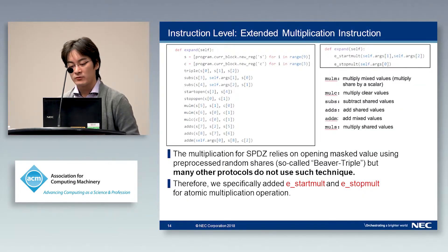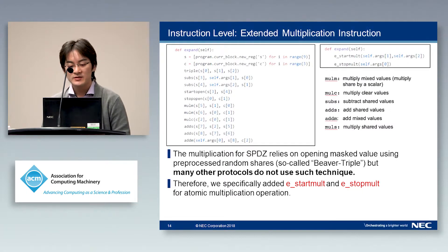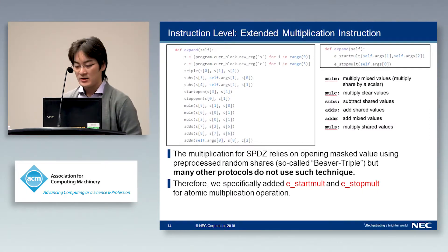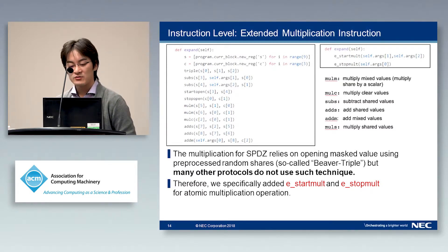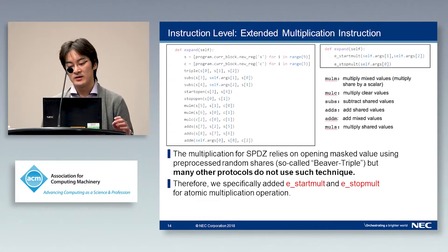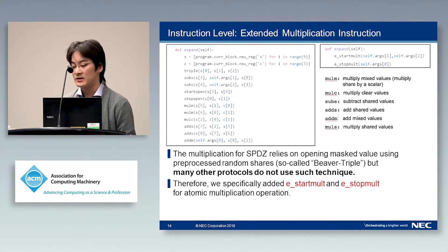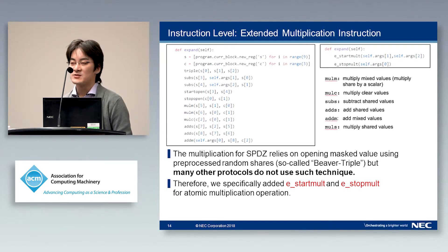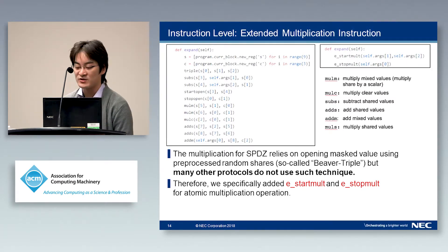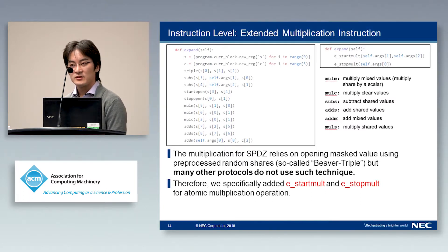Here we show an example of the instruction-level modification. We added a new instruction for multiplication. The left box in this figure shows the conversion rule for multiplication in the SPICE compiler. SPICE uses a well-known technique using preprocessed masked values — masking the input and opening it, then performing a local operation. Since other protocols do not use this technique for multiplication, we specifically added new instructions named E-STATMART and E-STOPMART — where E means 'extension' — for atomic multiplication, and also modified the corresponding optimization rules and processor.